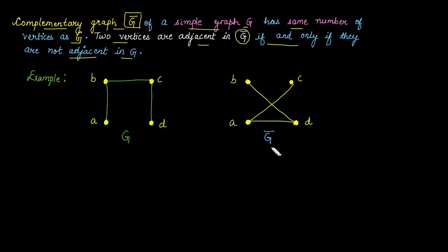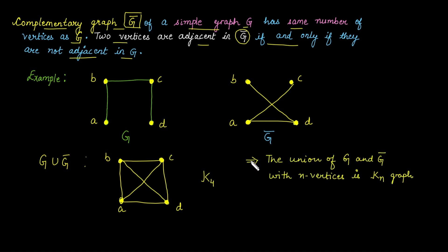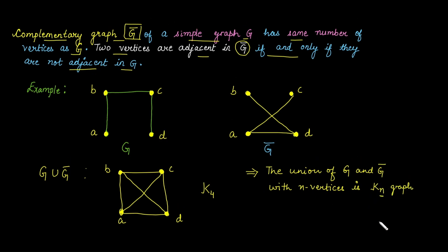This gives us the complementary graph of G. Next, we take the union of G with its complementary graph G-bar. With four vertices A, B, C, D, collecting edges from both graphs gives us G union G-bar, which is the K4 graph. There is an important result: the union of G and its complementary graph with n vertices is always a complete graph Kₙ with n vertices.